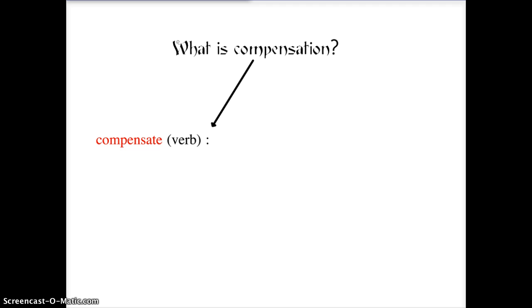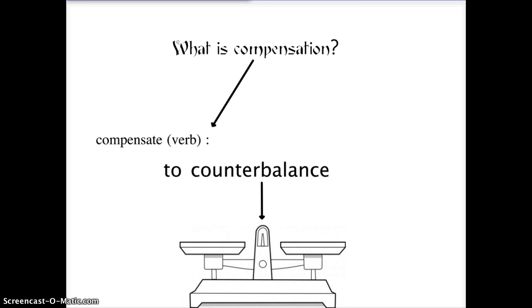You can think of the word compensate, which is a verb which means to counterbalance, like a balance scale. If you add 5 to one side, you have to subtract 5 to make it equal and fair. And the converse is also true. If you subtract 5, you must add 5.